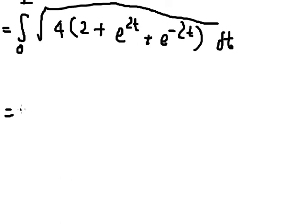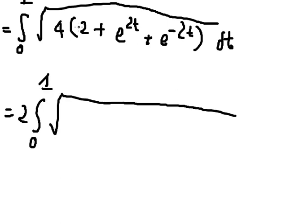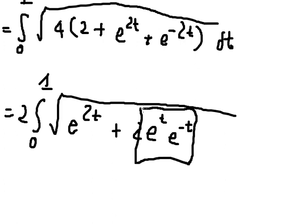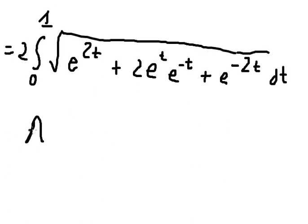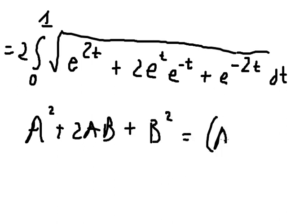So we have 2 times the square root of e to the power of 2t plus 2 times e to the power of t times e to the power of negative t — which equals 1 — plus e to the power of negative 2t. This is a squared plus 2ab plus b squared, which equals (a plus b) squared.